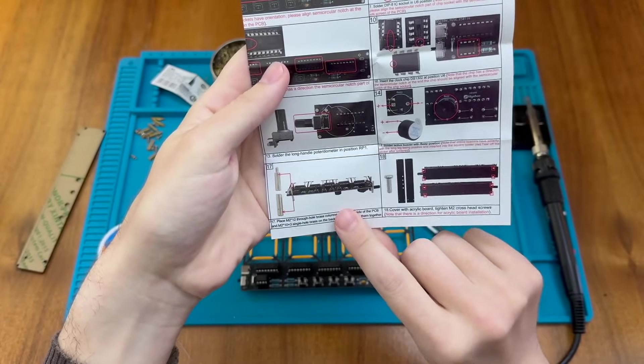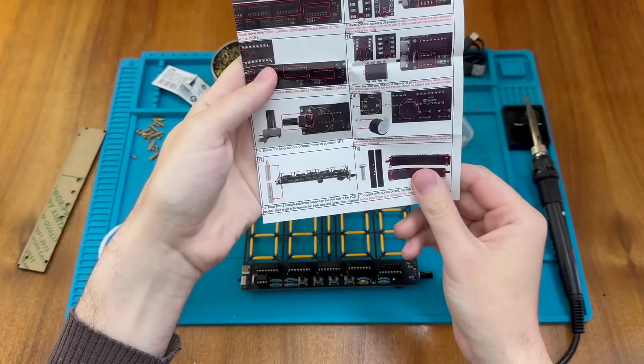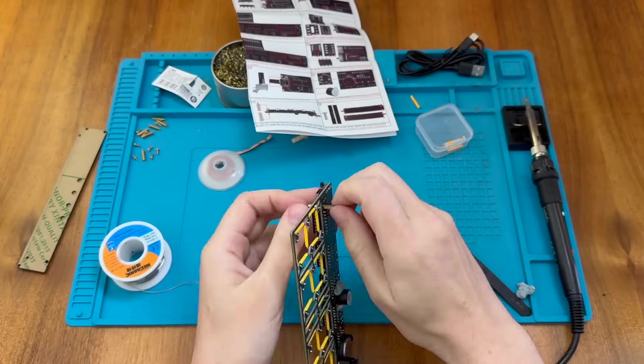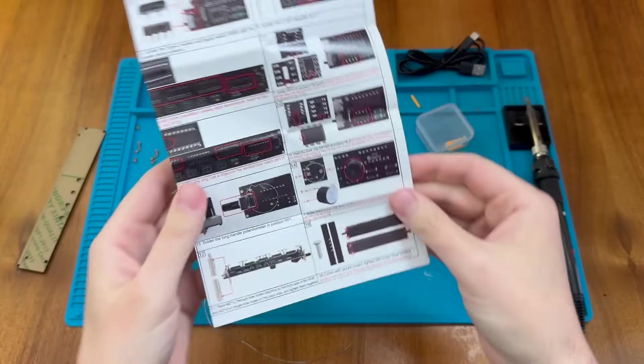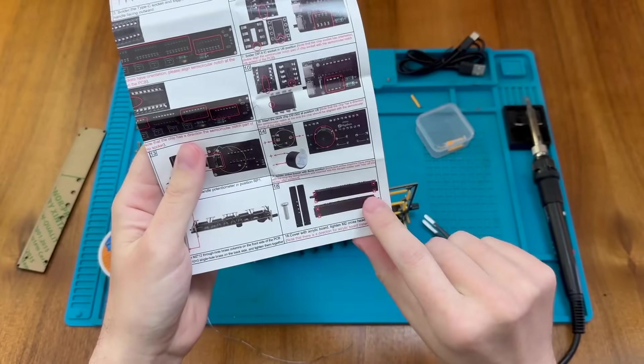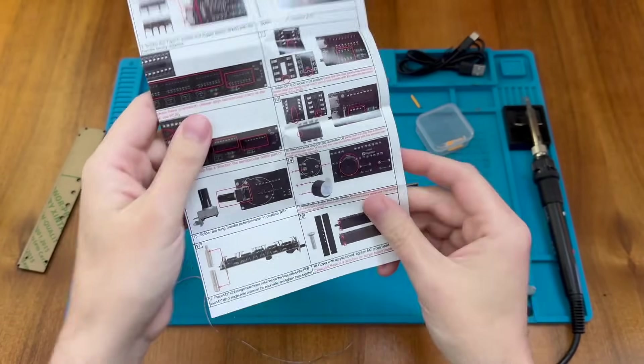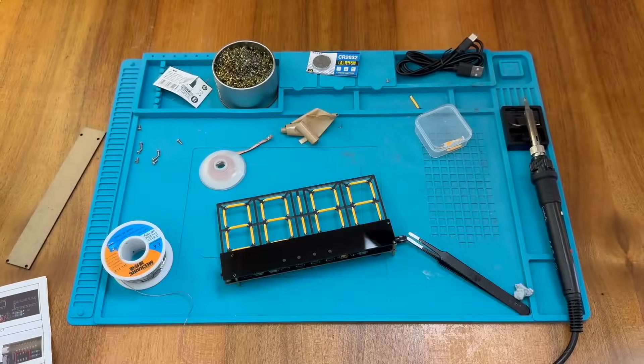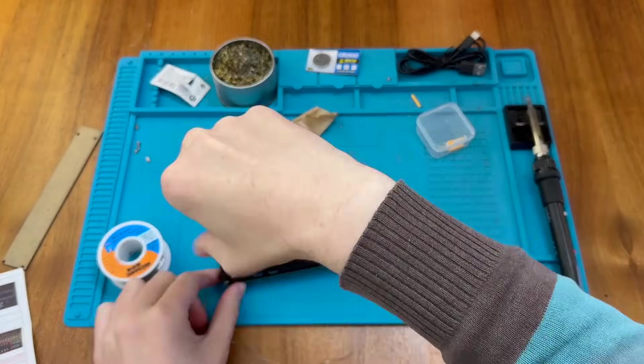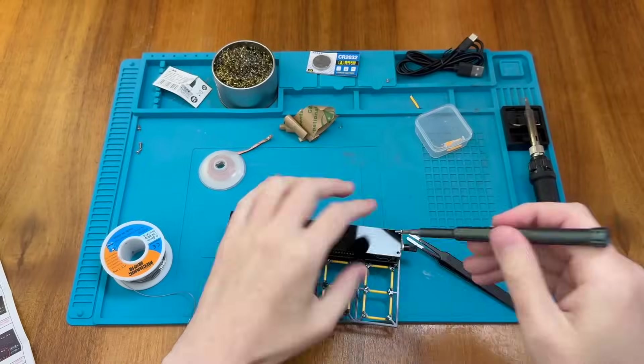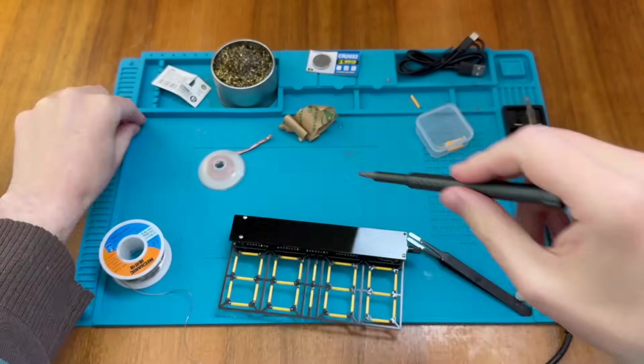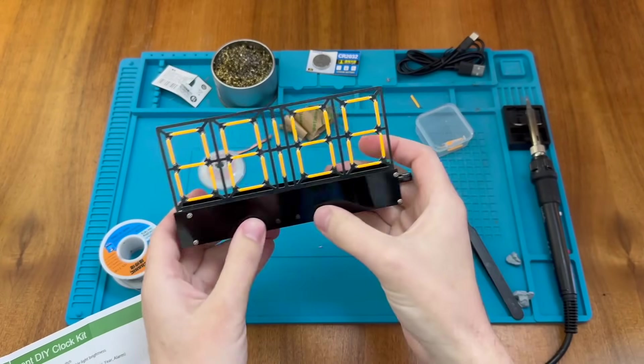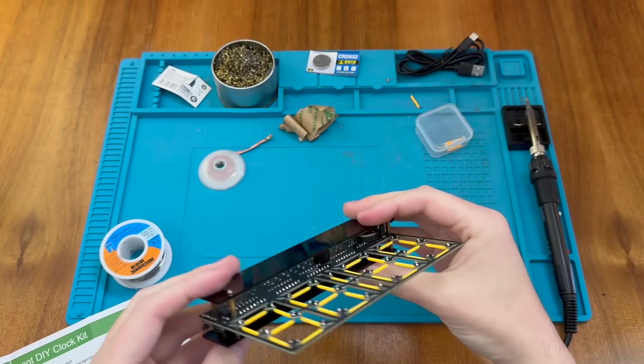Step 17 we then need to do the attachments and so we need to put these bars through. And then we need to attach the black plastic parts with the provided screws which is step 18. Okay so we should be fully assembled now. Next thing I need to do then is to try and apply some power.